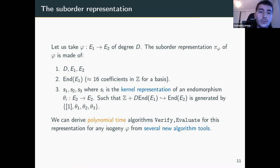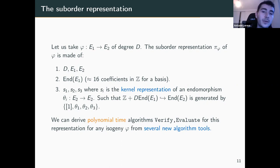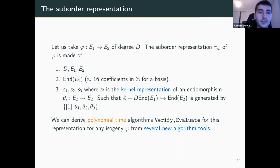We can derive polynomial-time algorithms for arbitrary degree for verify, evaluate, and even for computing the suborder representation from the ideal representation. Everything can be done efficiently. For now, what I present today is mostly theoretical and not very practical, but at least we have polynomial-time results, which is already a good step toward something efficient.